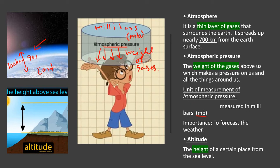Now let us move to the next technical term, which is altitude. What do we mean by altitude? In simple terms, altitude is the height of a certain place from the sea level. As you can see, from the sea level a certain height is what we call altitude.